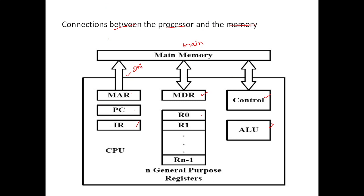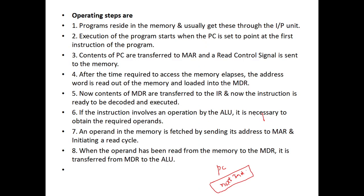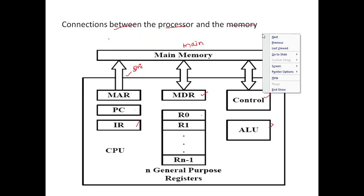When we look at the connections between the processor and the memory, we have the main memory connected to the memory address register and related components. These connections need to be handled very carefully — instructions should be forwarded from one unit to another in the correct manner, otherwise the instruction will not be processed correctly.